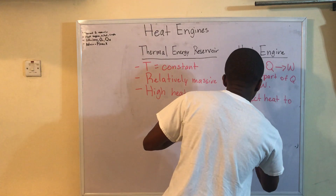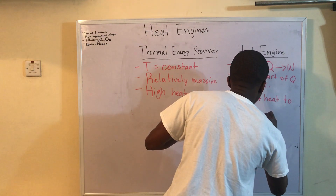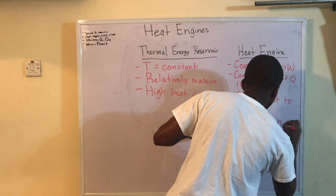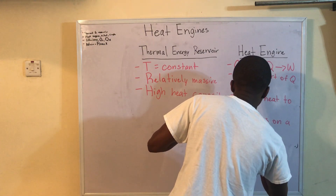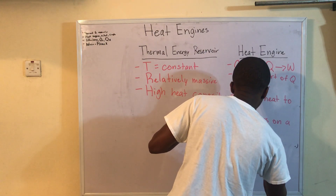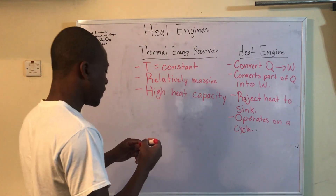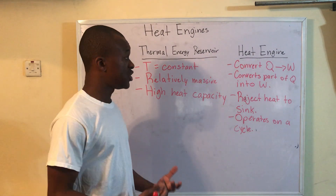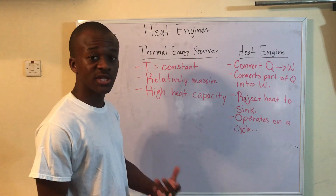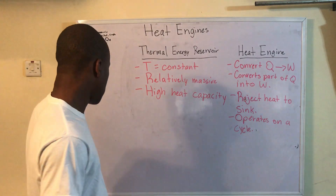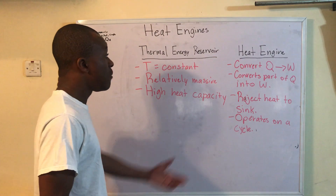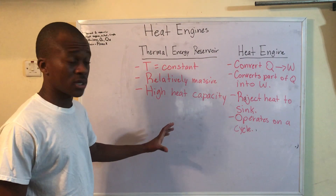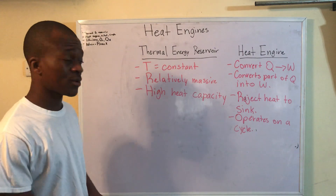A heat engine operates on a cycle — a cycle being where the end point is the same as the starting point. Heat engines use fluid, and the fluid used to produce this work is simply referred to as the working fluid. Those are the characteristics of a thermal energy reservoir — source or sink — and those are the characteristics of a heat engine.